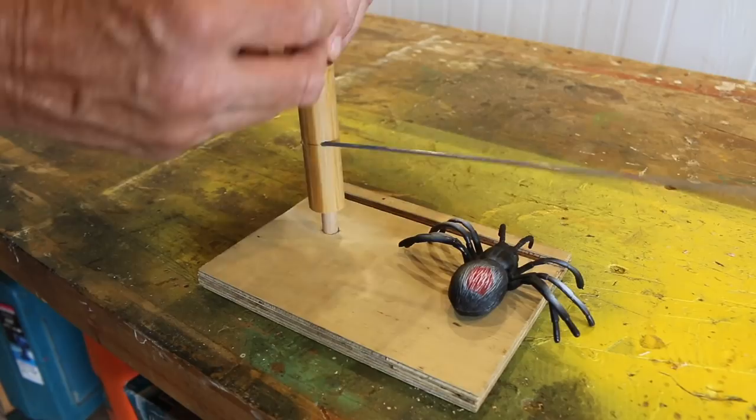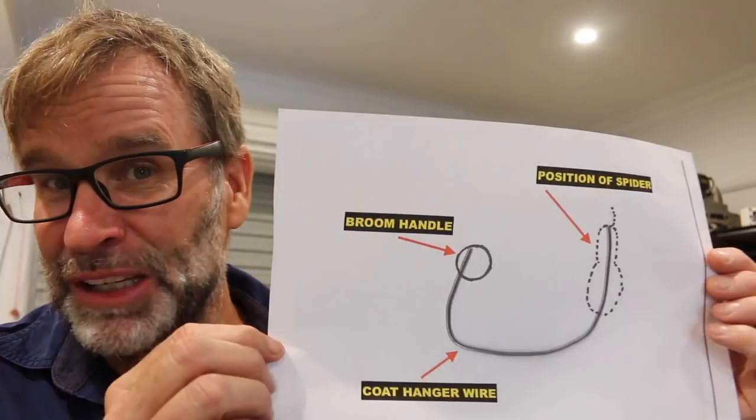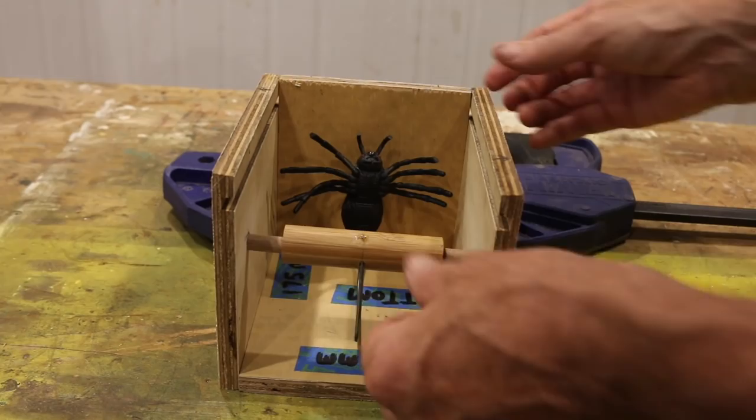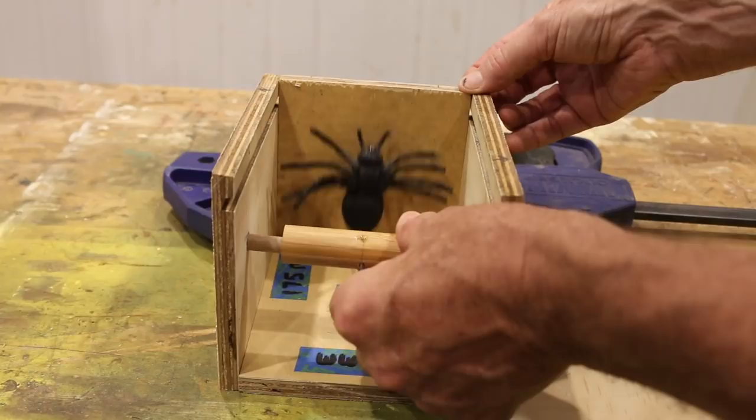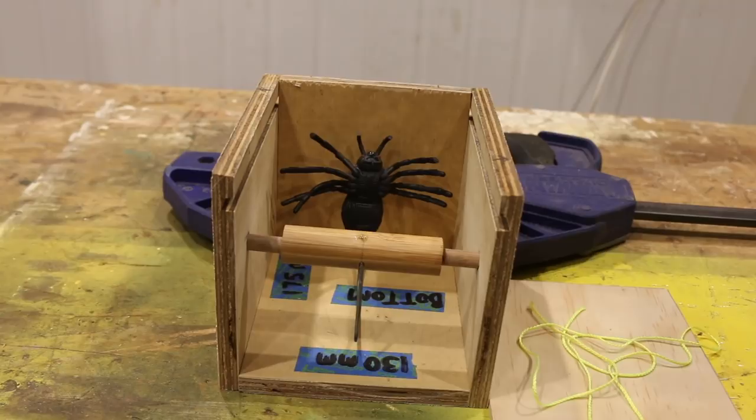Now this is the tricky bit where we need to bend this wire so that when the axle spins, the spider launches out of the box. Now to make that whole wire bending process thingy a bit easier, if you're making your scare box the same size as mine, I've drawn up this PDF, which you can download and copy from my blog post in the description box down below. So make sure you check it out. Alrighty. As you can see, this now works an absolute treat. How good does that look?